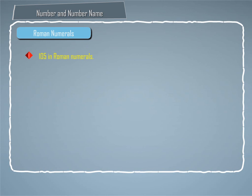Example 1: To write 105 in Roman numerals, we have 100 plus 5 equals CV.